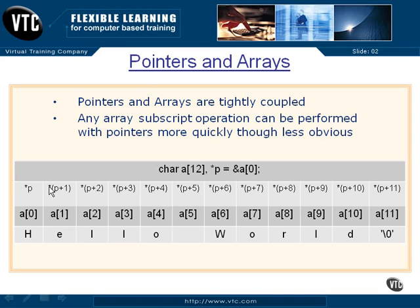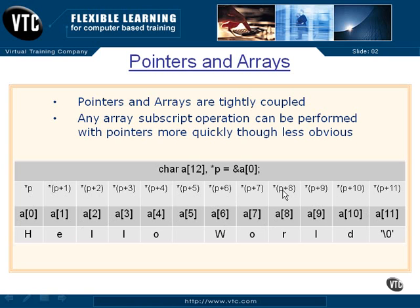We have to use the parentheses because of the relationship of the asterisk and the addition, so that we get the right form — we don't take the value out and add 1 to it. We want to add 1 to the pointer and then dereference it — get the contents of the pointer incremented by 1. We can use variables and other things here, not just literal numbers, to work our way up and down an array. It is also legal to use negative numbers and work your way backward down the array.